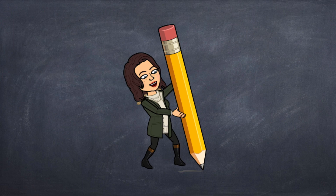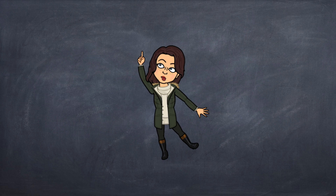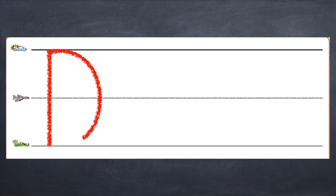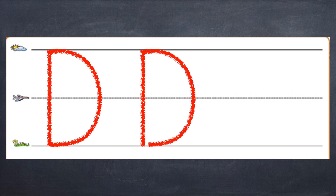Now it's time to write the letter D. If you can, get something to write with. If you don't have something to write with, that's okay — you can always use your pointer finger and trace the letters in the air. So we'll start off with our uppercase D. We start at the skyline and make a straight line down to the ground line, then go back up to the skyline and draw a line out, down, around, into the ground line.